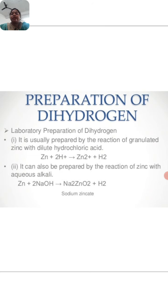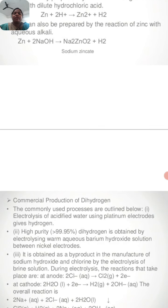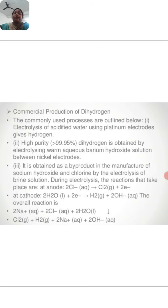Preparation of dihydrogen. The laboratory preparation of dihydrogen: it is usually prepared by the reaction of granulated zinc with dilute hydrochloric acid. When we react small pieces of zinc with dilute HCl, we get dihydrogen. This is Zn + 2HCl → ZnCl2 + H2. It can also be prepared by the reaction of zinc with aqueous alkali.